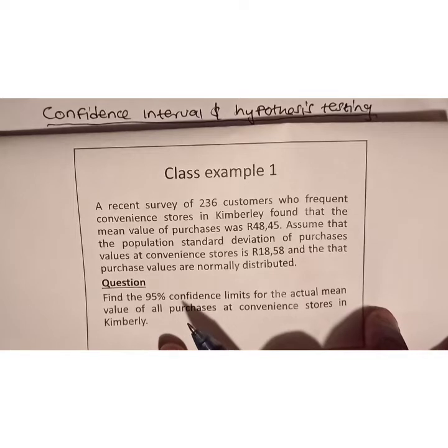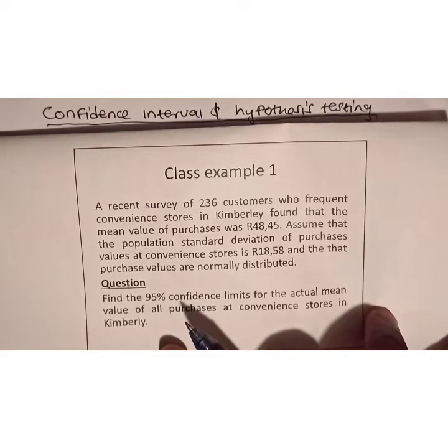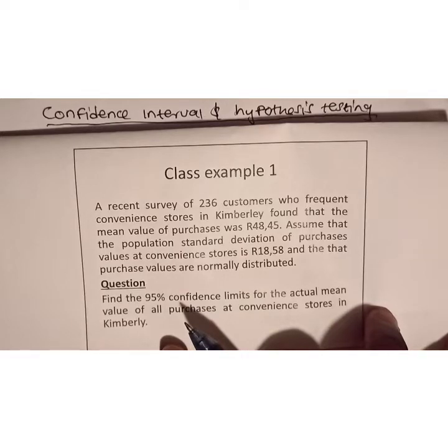Class Example 1: A recent survey of 236 customers who frequent convenience stores in Kimberley found that the mean value of purchases was 48.45. Assume the population standard deviation of purchase values at convenience stores is 18.58 and that purchase values are normally distributed. Find the 95% confidence limits for the actual mean value of all purchases at convenience stores in Kimberley.